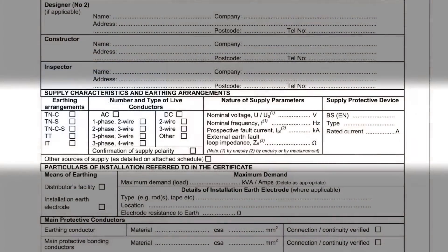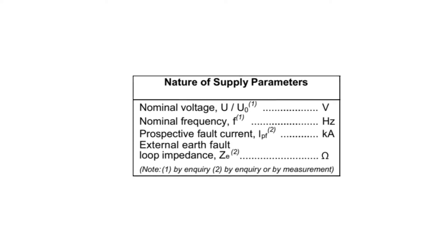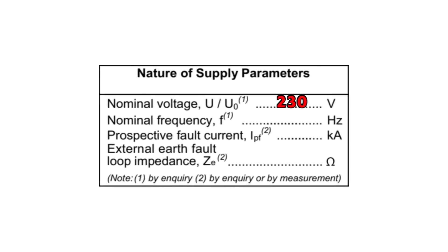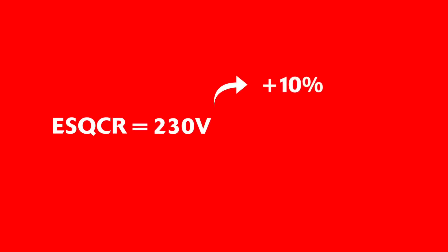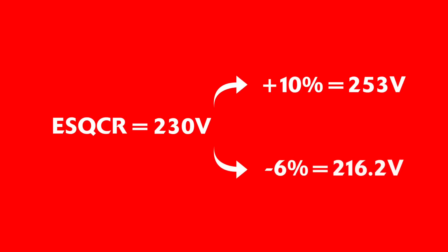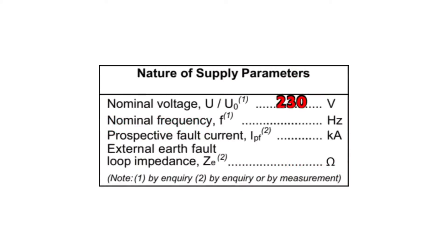Completing the information in this box, we'd assume a nominal voltage of 230 volts. In reality, to comply with the Electricity Supply Quality and Continuity Regulations, the voltage can be up to 10% higher at 253 volts and as low as 6% below the nominal at 216.2 volts. However, we generally carry out our design calculations at the nominal voltage of 230 volts so we've got a standardised value to work with, as we can't predict what it will be on an installation.